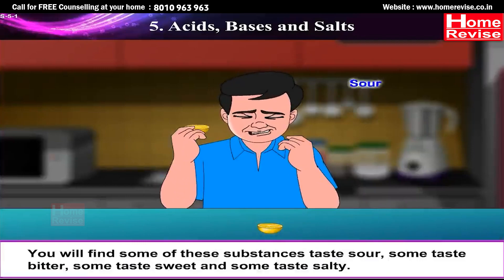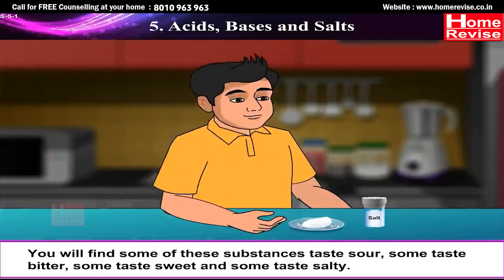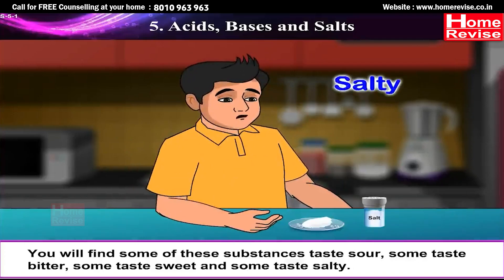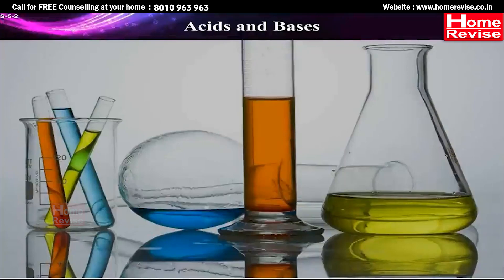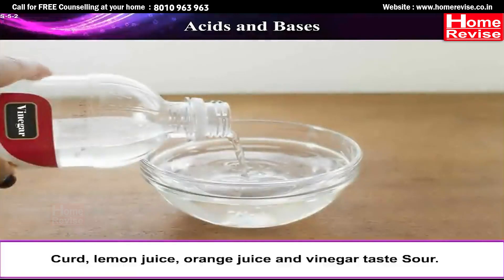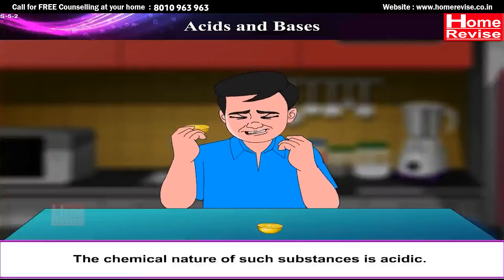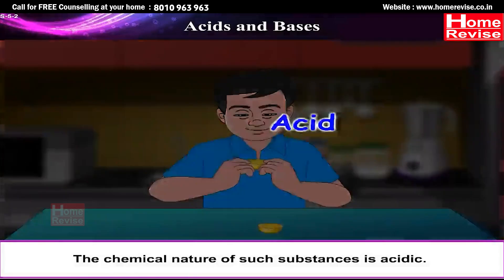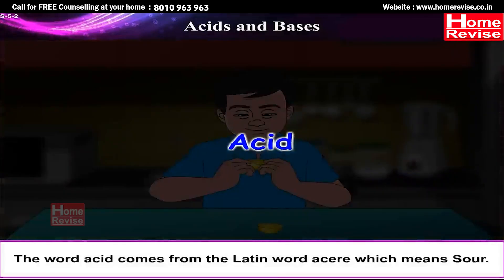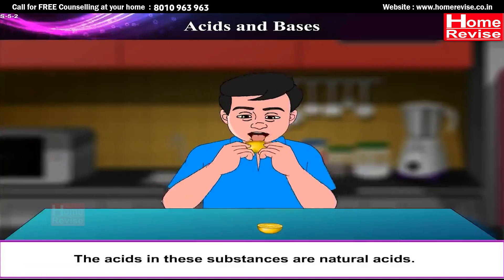You will find some substances taste sour, some taste bitter, some taste sweet and some taste salty. Acids and bases: curd, lemon juice, orange juice and vinegar taste sour. These substances taste sour because they contain acids. The chemical nature of such substances is acidic. The word 'acid' comes from the Latin word 'acere' which means sour.